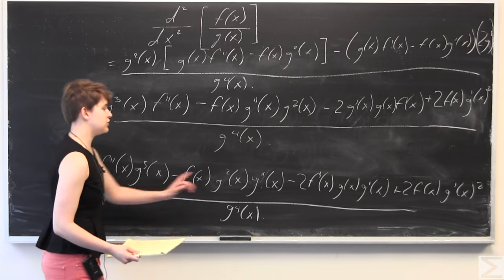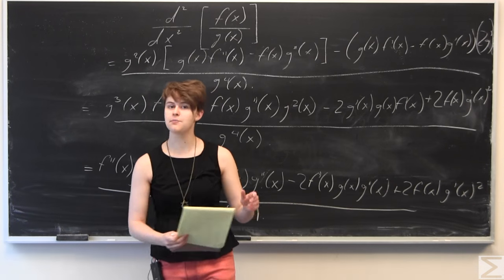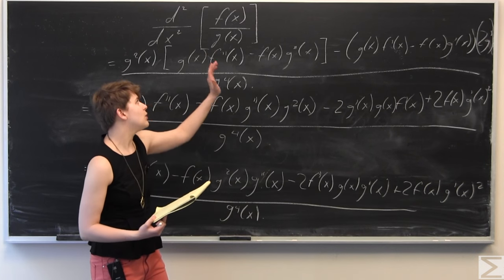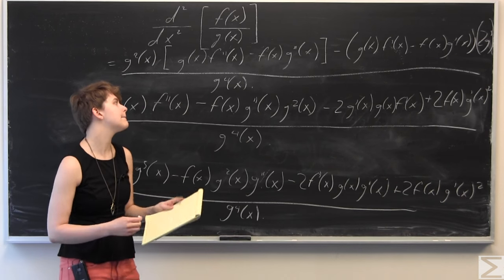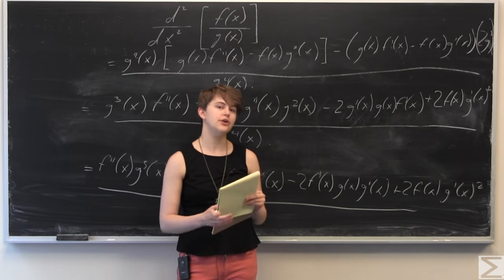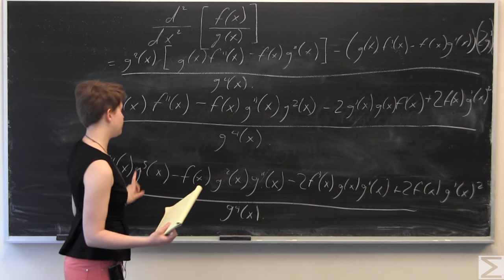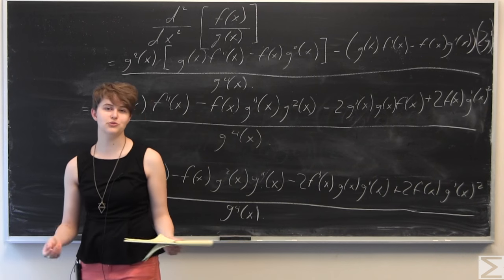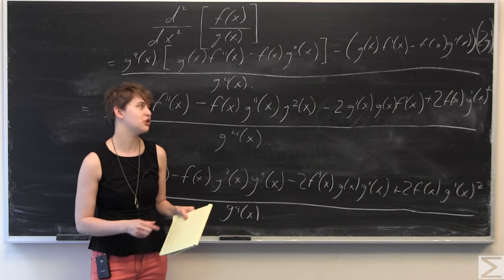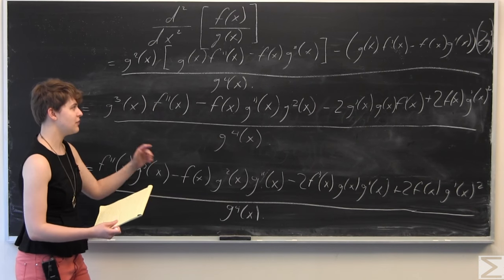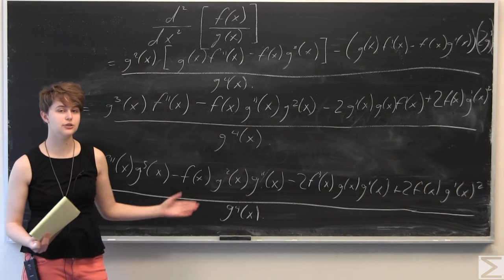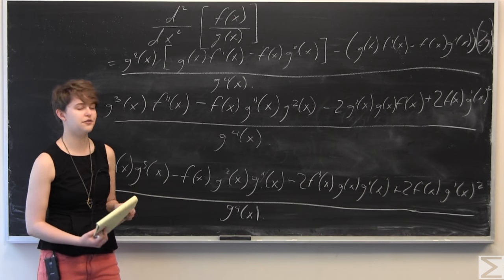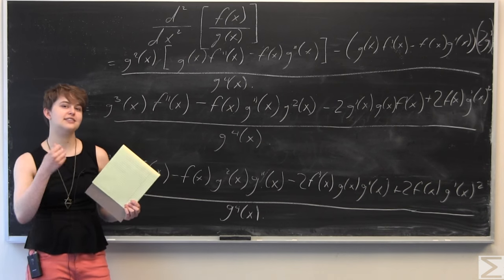It looks like we can't simplify things anymore. The first time we applied the quotient rule was very straightforward, just obtaining the standard quotient rule formula. Then applying it again required employing chain rule, product rule, and quotient rule again. After all that work and simplification, we ended up with this expression — not one you'd want to memorize like the regular quotient rule, since it's very complicated. But this gives us the formula for the second derivative of f(x)/g(x) for two C2 functions where g(x) is non-zero.